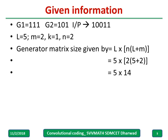The generator matrix size is in general l cross n into (l plus m), where l is the number of input bits. With l equal to 5, memory equal to 2, and n equal to 2, we need a 5 cross 14 matrix size.